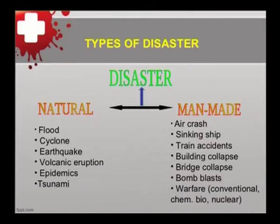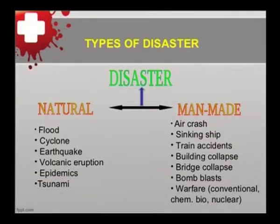Types of disasters include natural — cyclones, floods, earthquakes, volcanic eruptions, epidemics, tsunamis — and manmade — air crashes, sinking ships, train accidents, building collapse, bridge collapse, bomb blasts, and warfare. However, a certain percentage of natural disasters can be after-effects of human-induced activity. For instance, a landslide could be caused by constant soil erosion and deforestation due to human intervention — even though the final product is a natural disaster, it is ultimately caused by human beings.